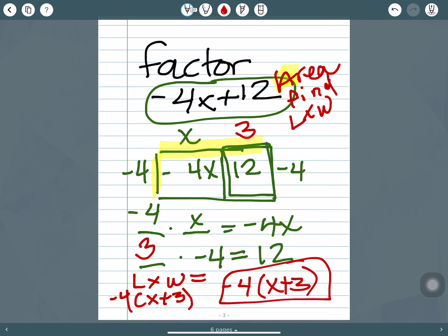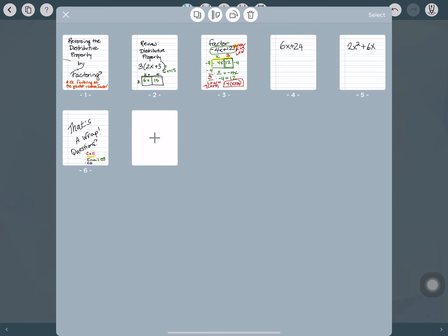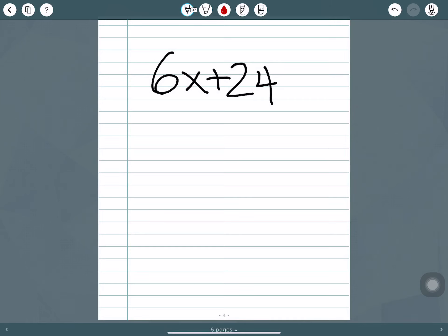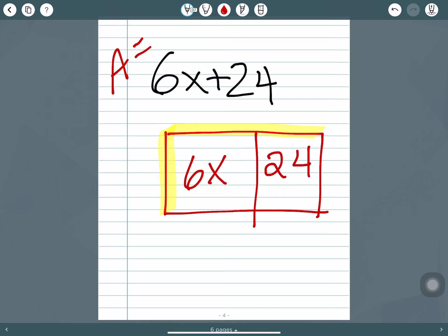So let's look at the next example. Again, this is the area, and we need to find the length and the width. So we're trying to find the length and the width of our rectangle. So we're going to put each term. So the area of this rectangle is 6x, the area of this rectangle is 24.